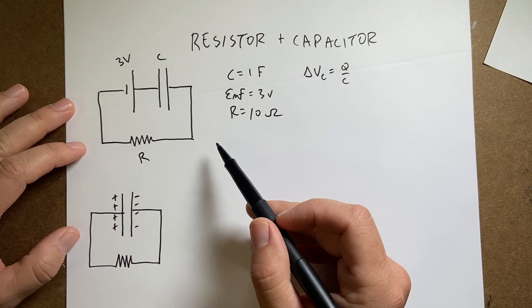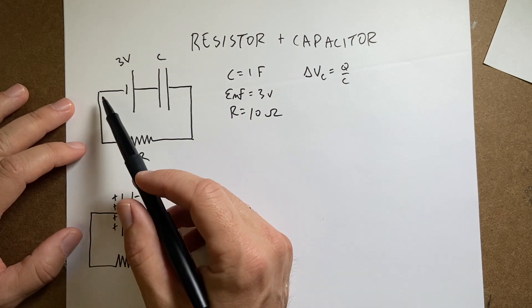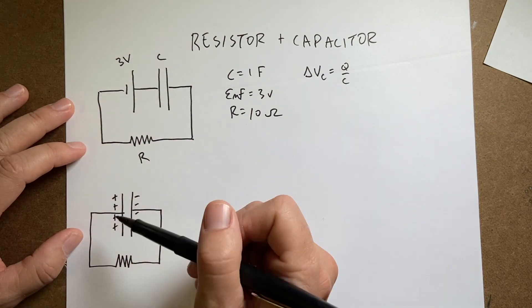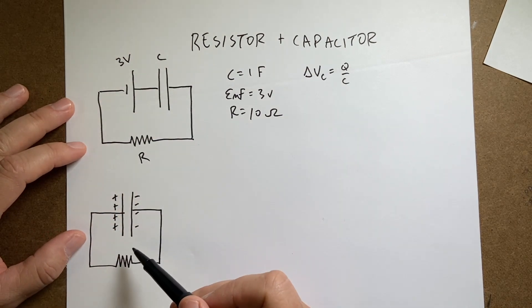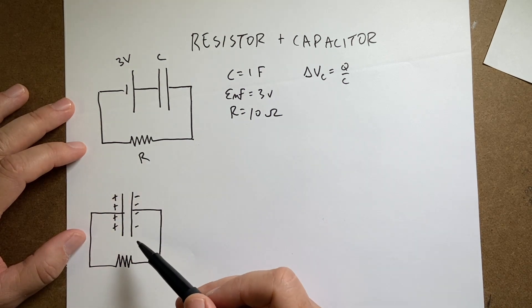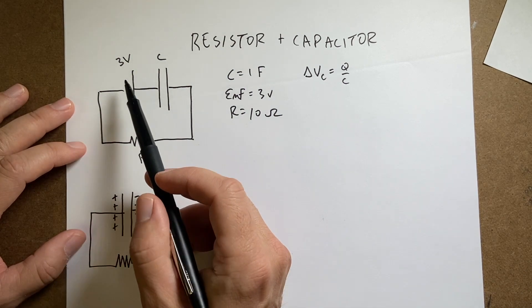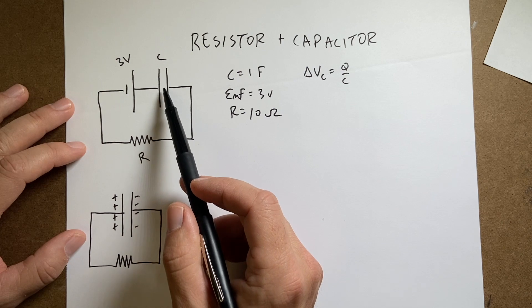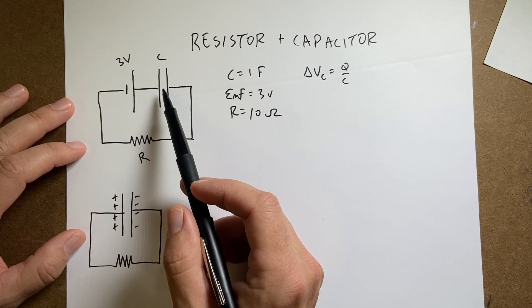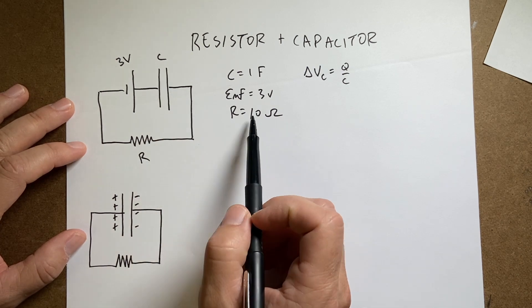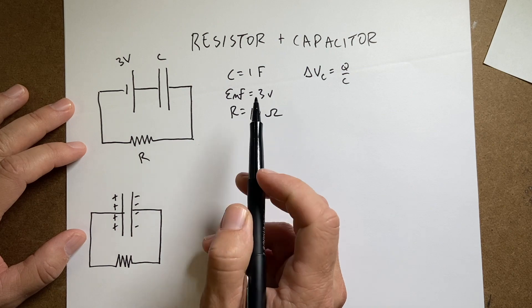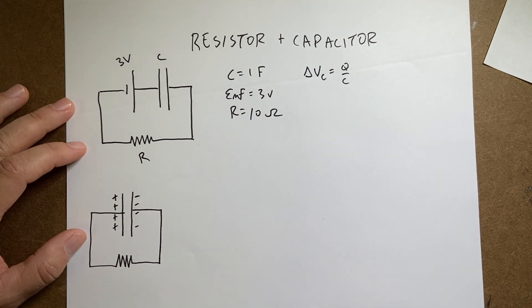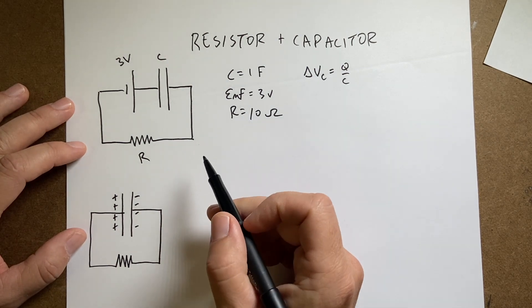So I have both a case with a battery, a capacitor and a light bulb where it starts off very bright and then slowly gets dimmer, and then with just the capacitor the light bulb again starts off very bright and gets dimmer. We want to model both of these situations. The battery is 3 volts, the capacitance is 1 farad — which is really large but it works out well — and I use a 10 ohm resistor, which is actually a light bulb.